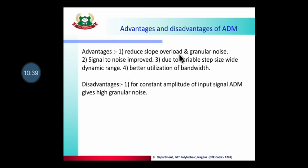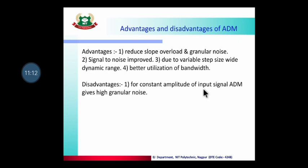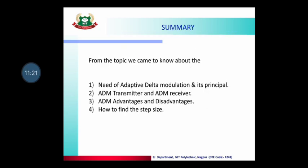Advantages of ADM: slope overload distortion and granular noise are reduced; signal-to-noise ratio is improved; due to variable step size, a wide dynamic range is available; and bandwidth utilization is improved. Disadvantage: if the original signal has a constant amplitude, ADM will not work effectively because the step size will not vary, and granular noise will continuously be generated.